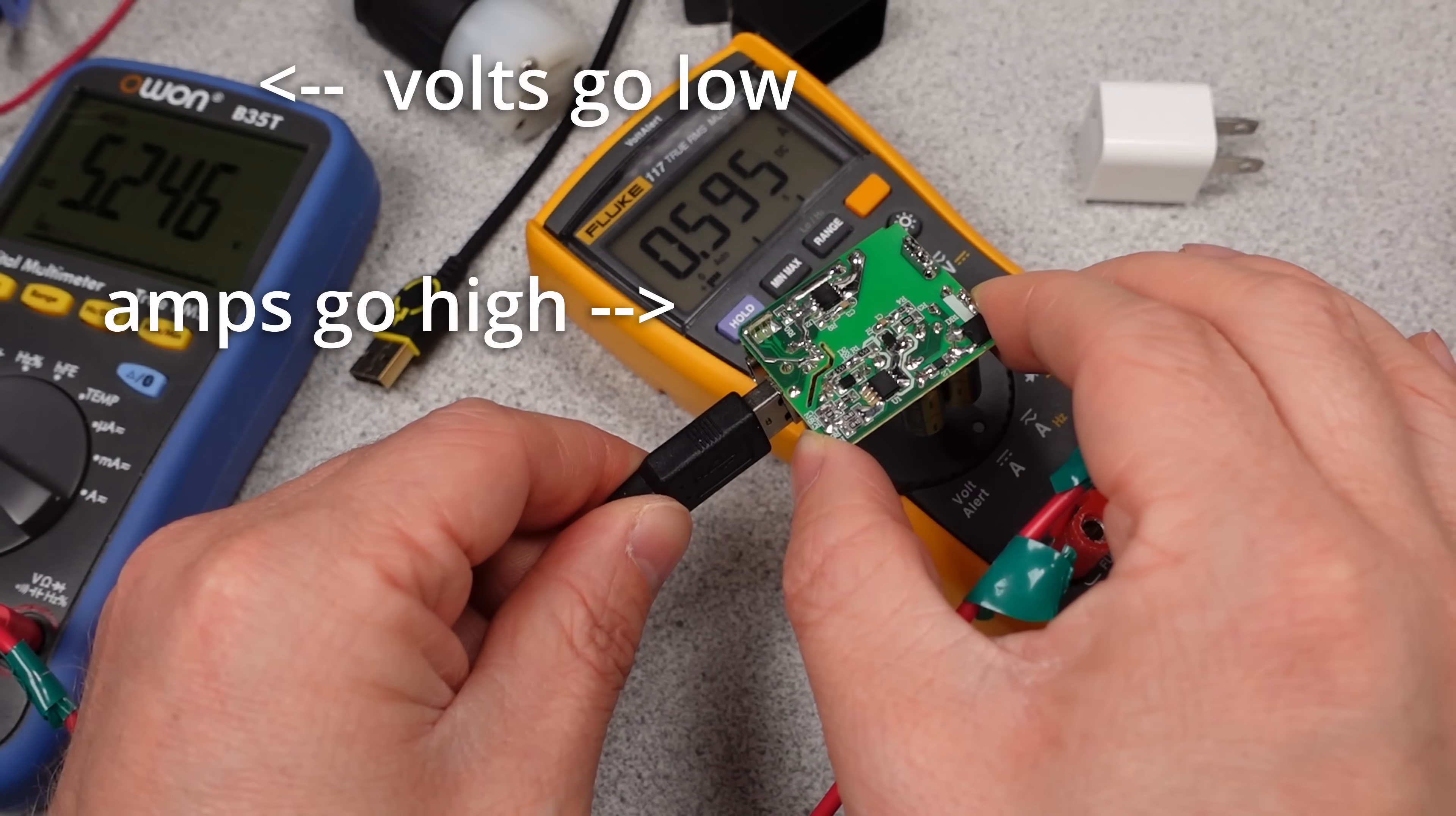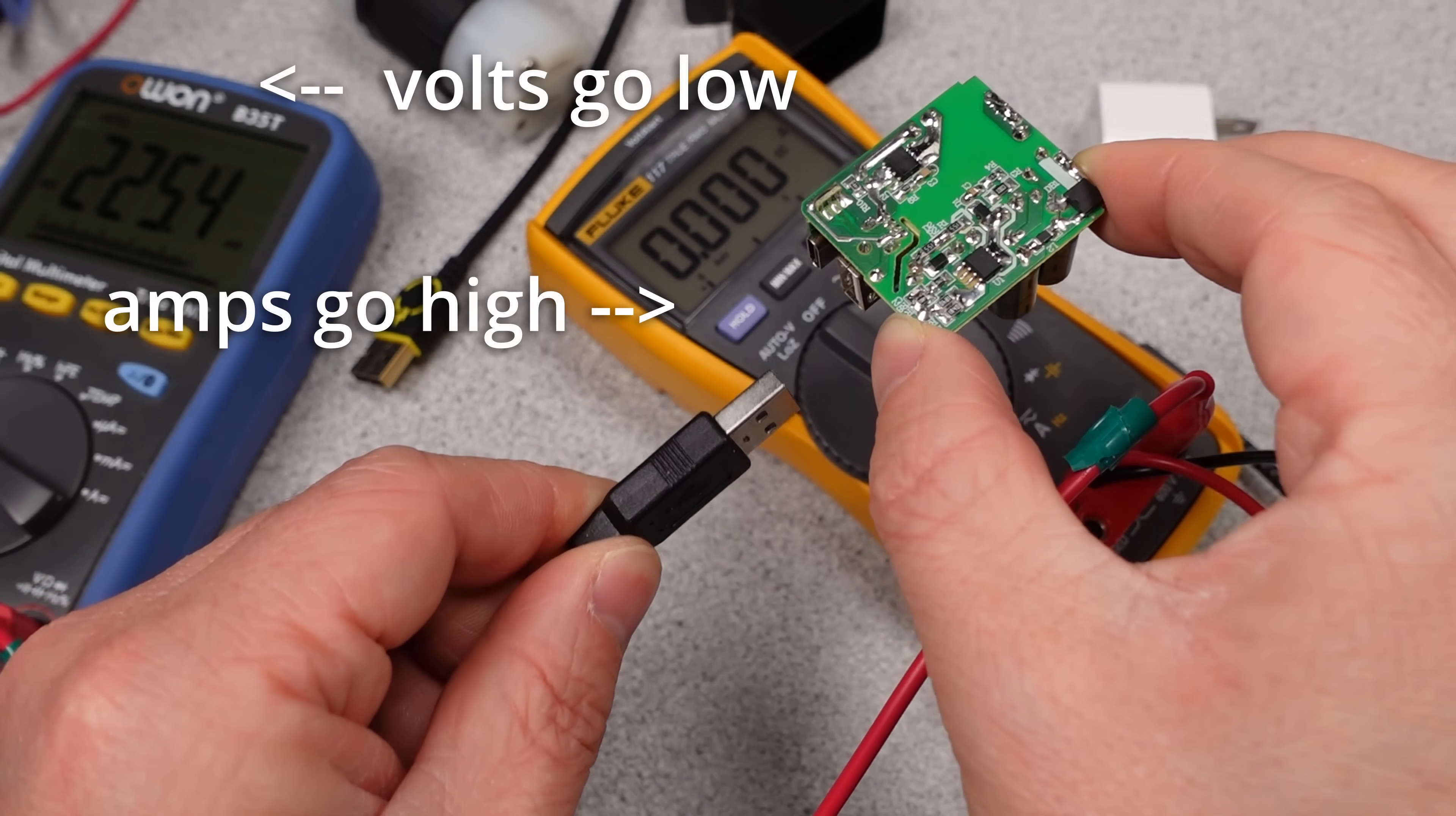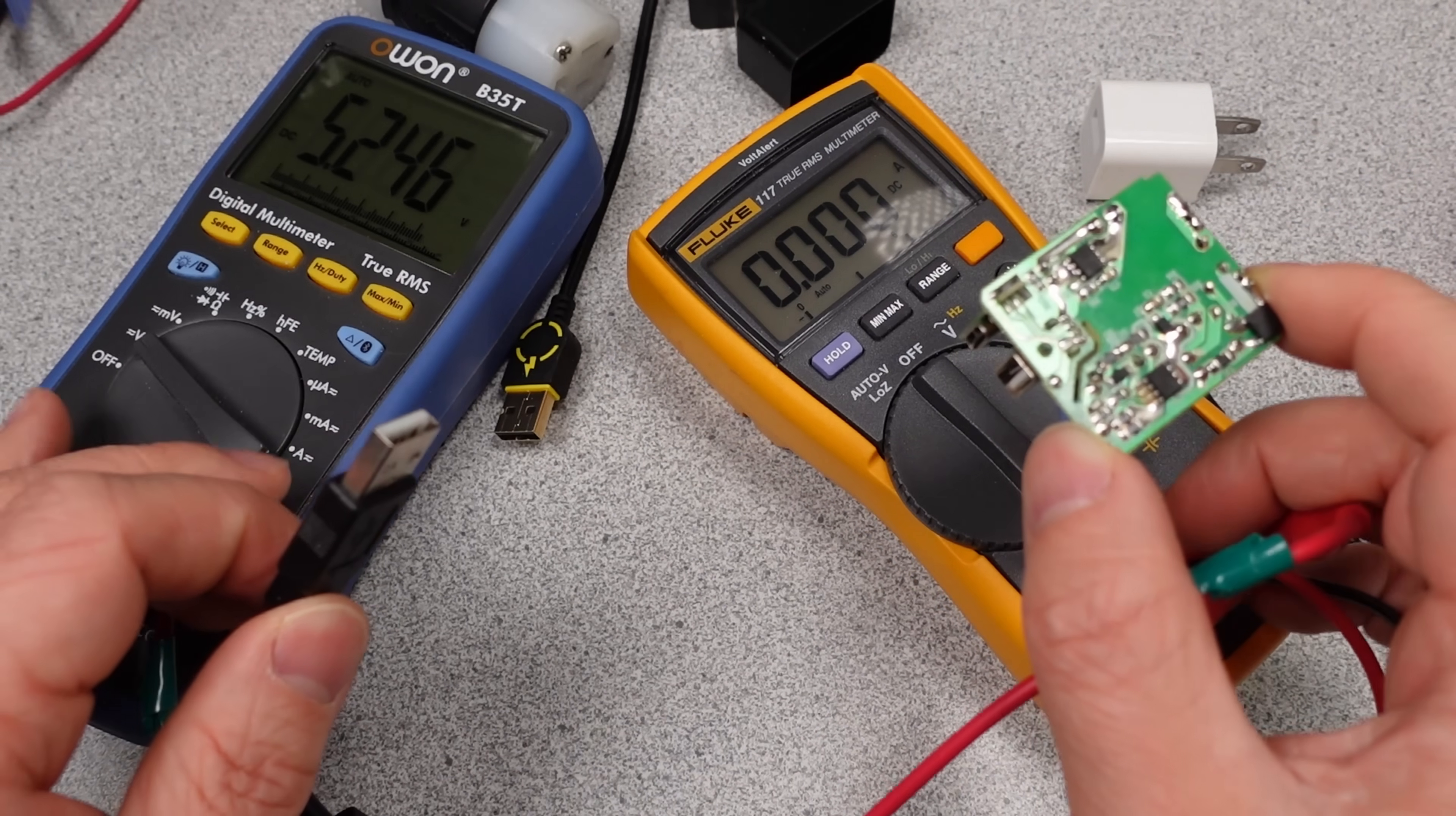So we've identified the problem is somewhere in the output of the device. But what is it? Is it a shorted capacitor? Is it a shorted connector? Trace on the circuit board? The transformer? Or something else? There's so many things to check.